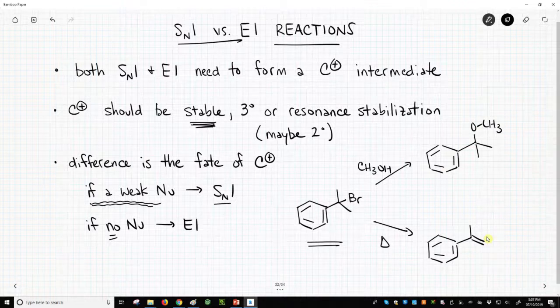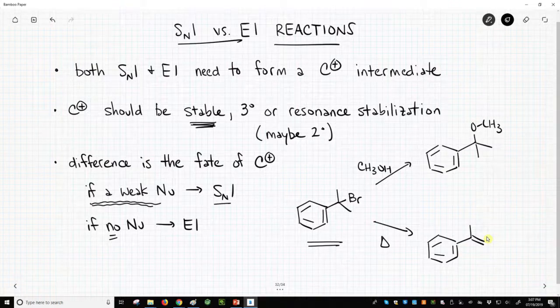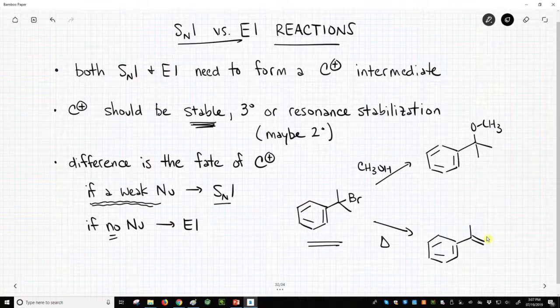So the reactions are very similar. They both start with a carbocation. It's what happens to that carbocation. Carbocations are either attacked, that gives us the SN1 product, or they lose a beta hydrogen that gives us the E1 product.